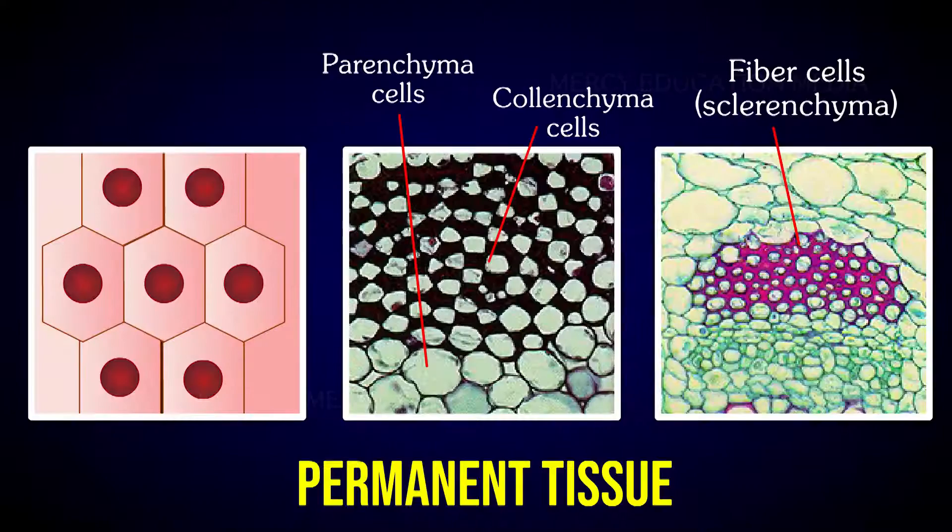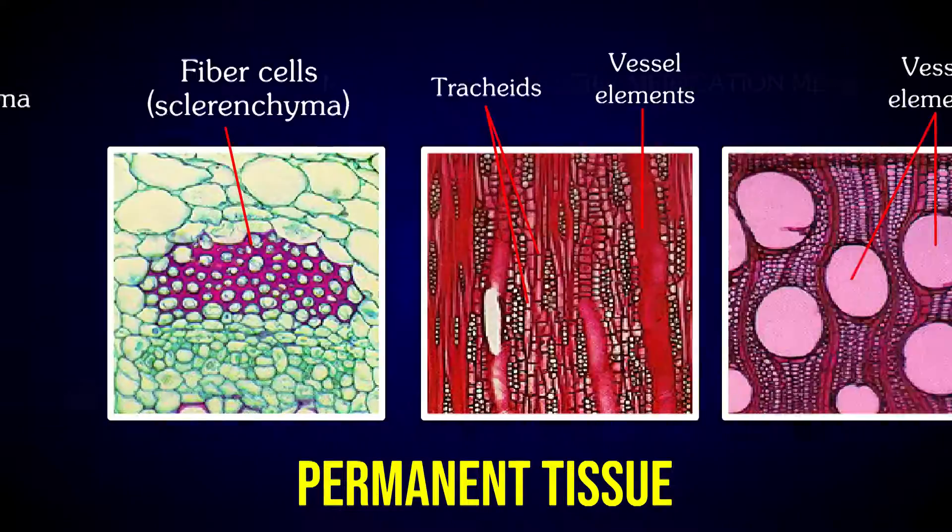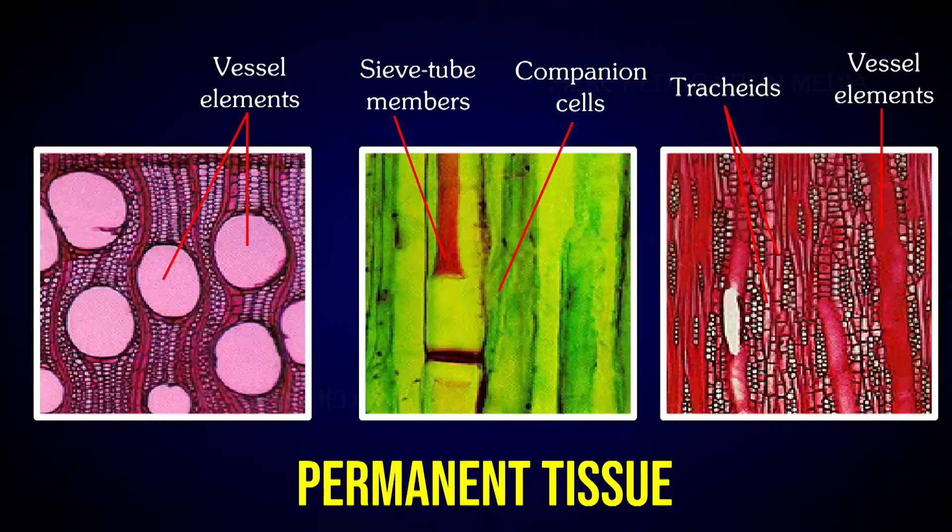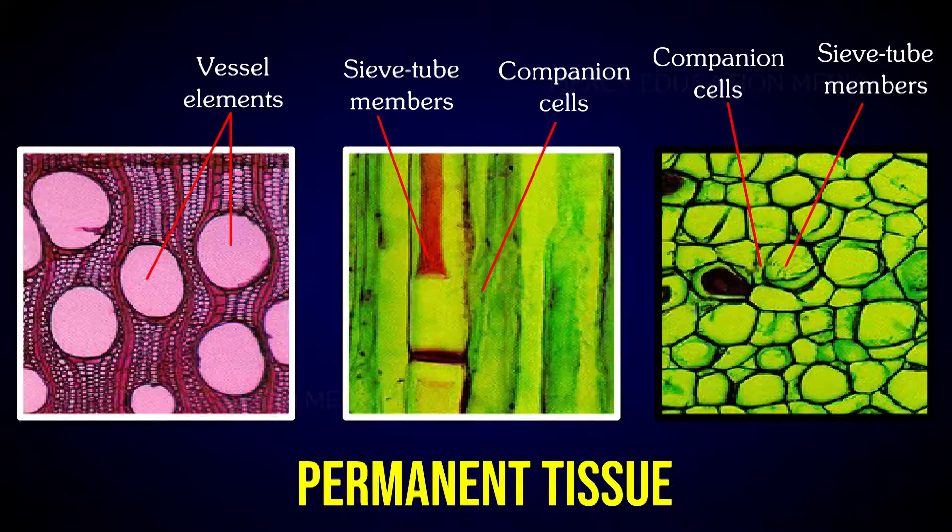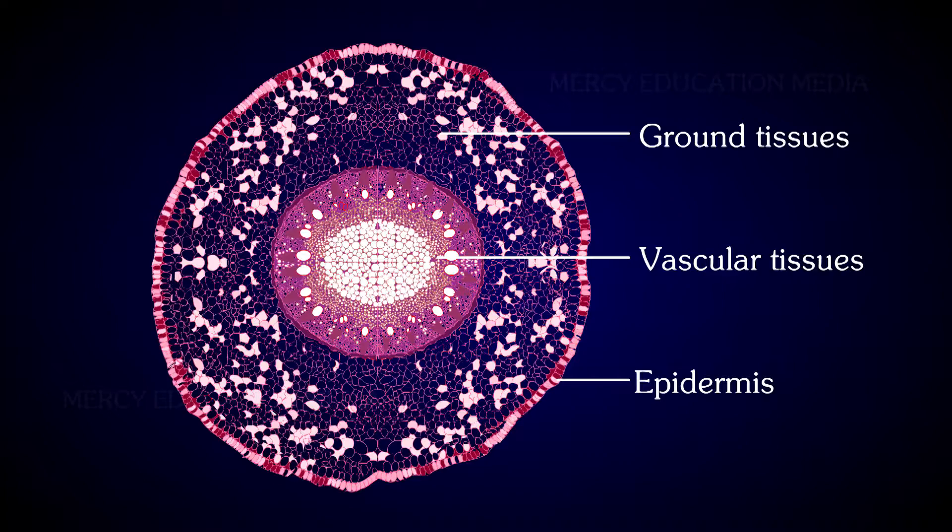How are the permanent tissues? The cells which are formed by apical meristem are differentiated into different types of permanent tissues. These tissues have lost the power of dividing either permanently or temporarily. Classification of permanent tissue: based on the constituent cells, the permanent tissue is classified into two types, simple tissue and complex tissue.